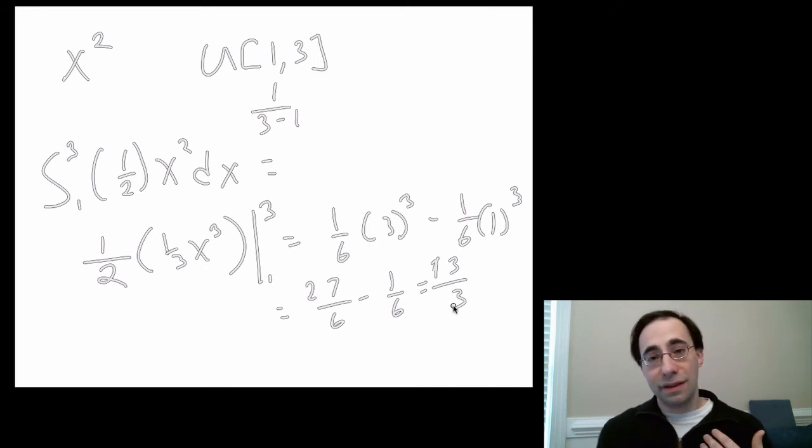You have the expected value to you of this situation in which you care about something more and more as you get more of it, and you have an equal chance of getting somewhere between 1 and 3.